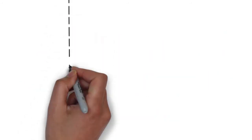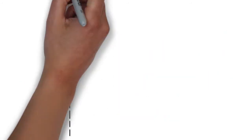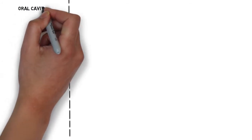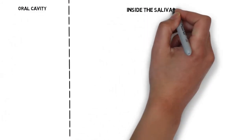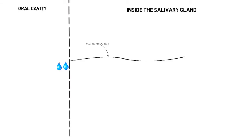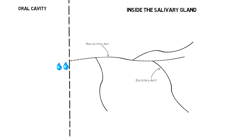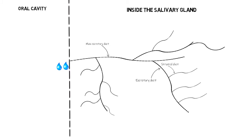Hello and welcome back everyone. Today in this lecture we will be looking into the histology of salivary glands. Inside the salivary gland there is an extensive network of branching ducts, and all of these branches terminate into a sac-like cavity at the end. This sac-like end piece is known as the secretory end piece.